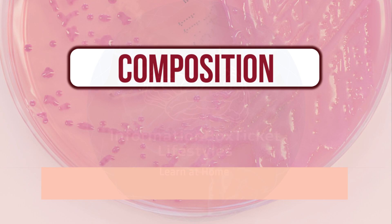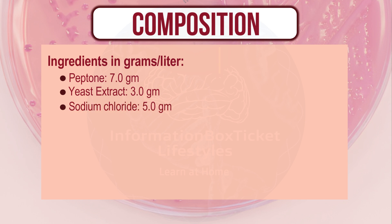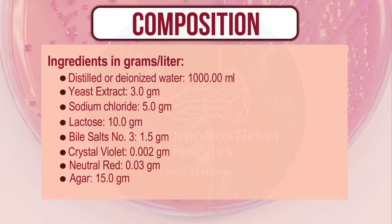Composition of VRBL agar (ingredients per liter): Peptone 7g, Yeast extract 3g, Sodium chloride 5g, Lactose 10g, Bile salts No. 3 at 1.5g, Crystal violet 0.002g, Neutral red 0.03g, Agar 15g, Distilled or deionized water 1,000 mL. Final pH: 7.4 ± 0.2 at 25°C.